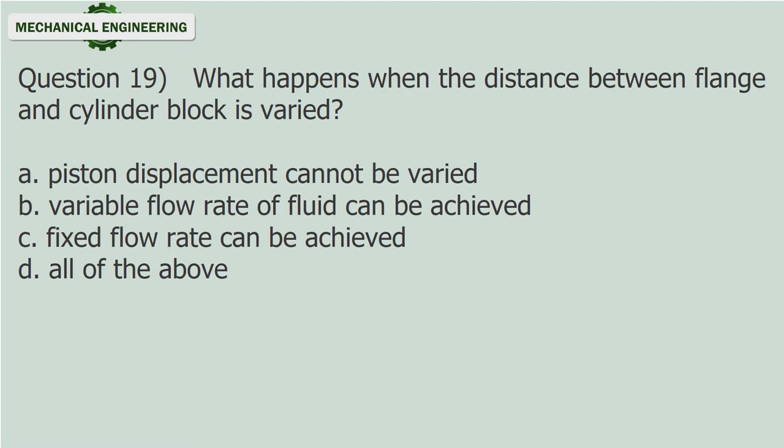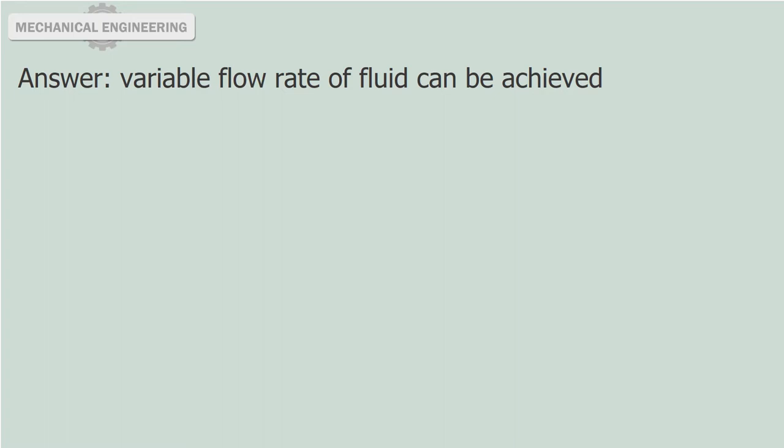Question 19: What happens when the distance between the flange and cylinder block is varied? A) piston displacement cannot be varied, B) variable flow rate of fluid can be achieved, C) fixed flow rate can be achieved, D) all of the above. Answer: Variable flow rate of fluid can be achieved.